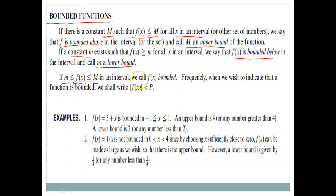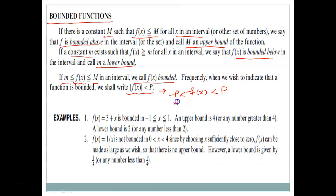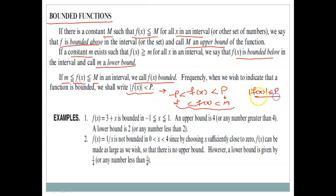If a function has both a lower bound and an upper bound, we say the function is bounded. Frequently, to indicate a function is bounded, we write |f(x)| < p, which means f(x) lies between -p and p. Sometimes it is written as |f(x)| ≤ p.